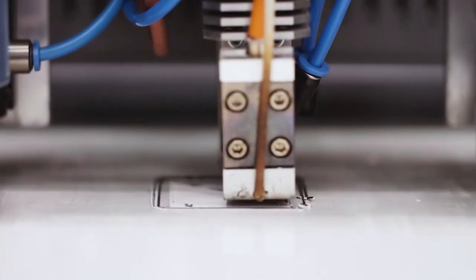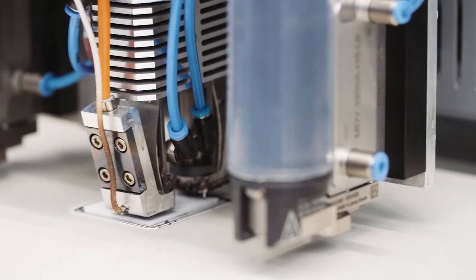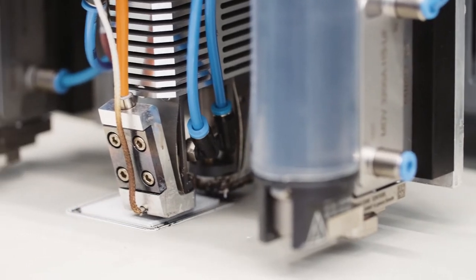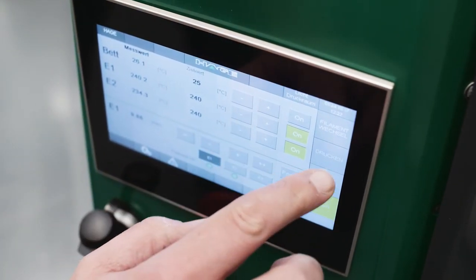This leads to a new layer. When that layer is finished, the printing table is lowered by the thickness of the layer and another layer is added. In this way, layer upon layer, a complete component is built.